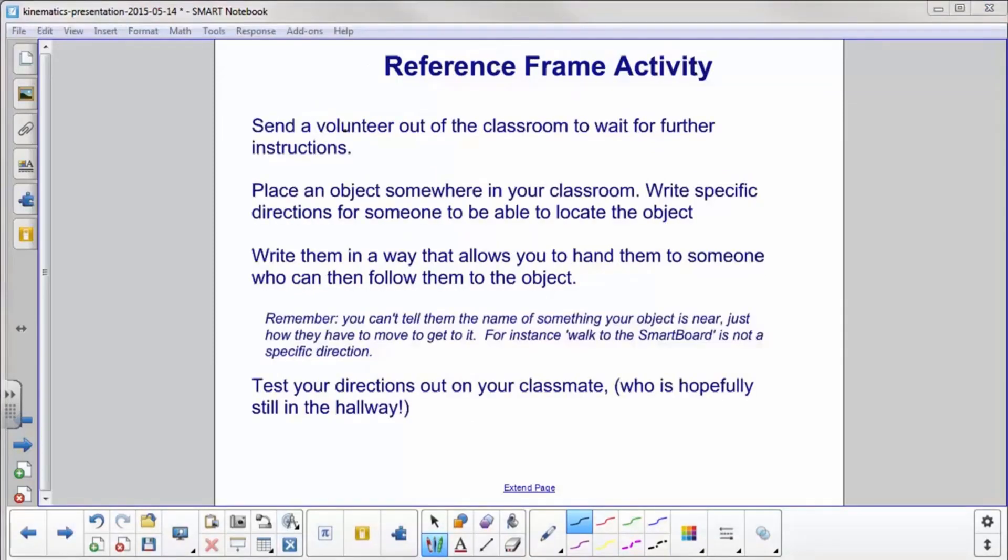Let's try an exercise to see if we can come up with what a reference frame is. First of all, we'll need a volunteer who will have to leave the classroom to wait for further instructions. Now we're going to place an object somewhere in your classroom. We need the team to write specific directions for that person who left to be able to come in and locate the object. You have to write them in such a way that you can hand them to that person. They can then follow the direction to the object. However, a couple more rules. You can't tell them where it's near. You can just say how they have to move to get to it. For example, walk to the smart board is not a specific direction. So then, bring your classmate back in, give them the sheet of directions, and ask them to find the object.